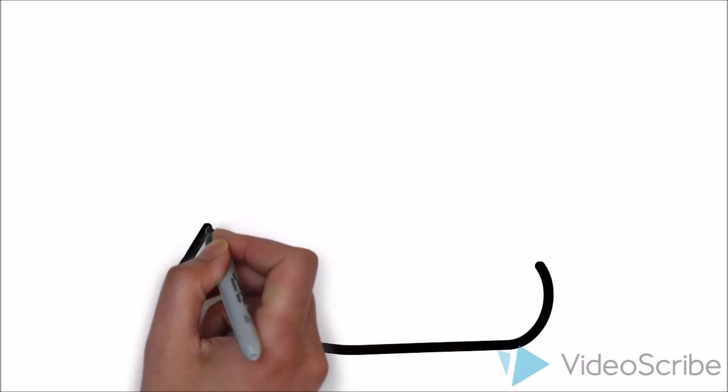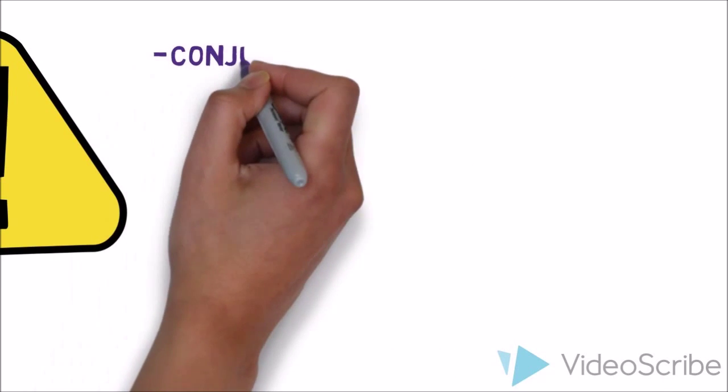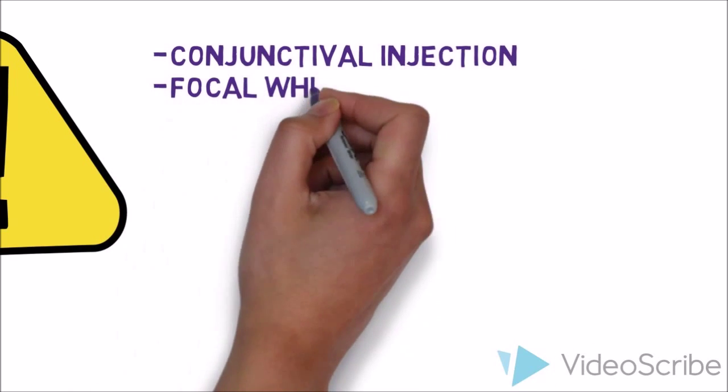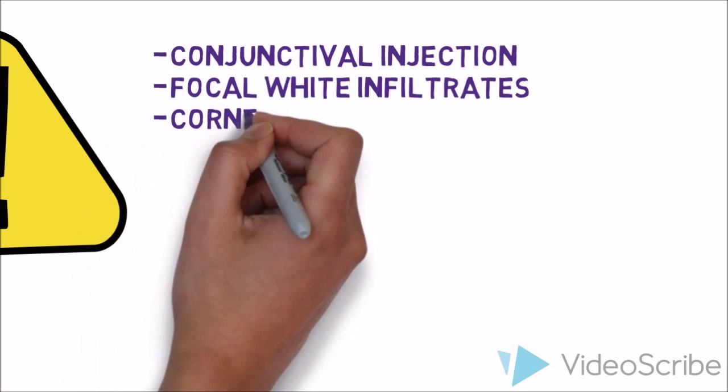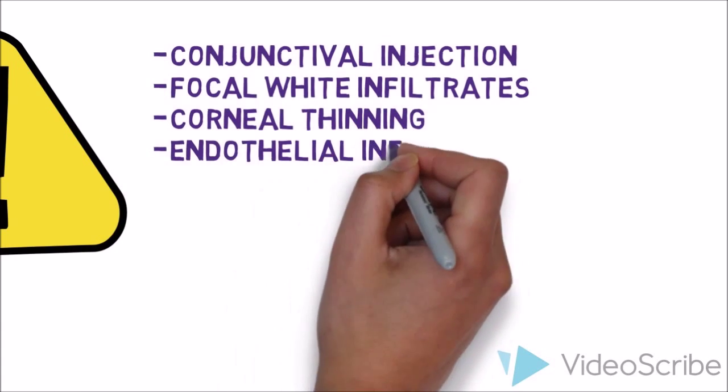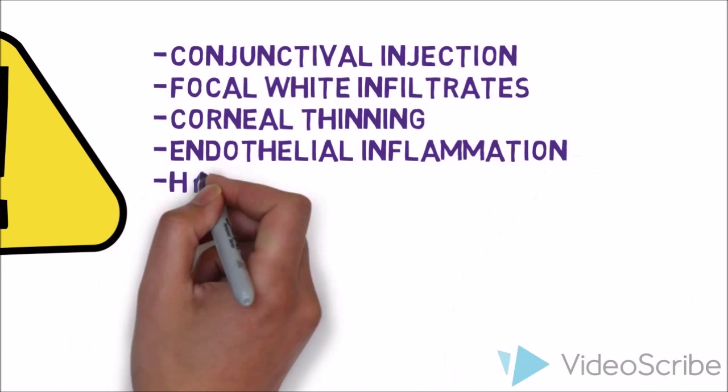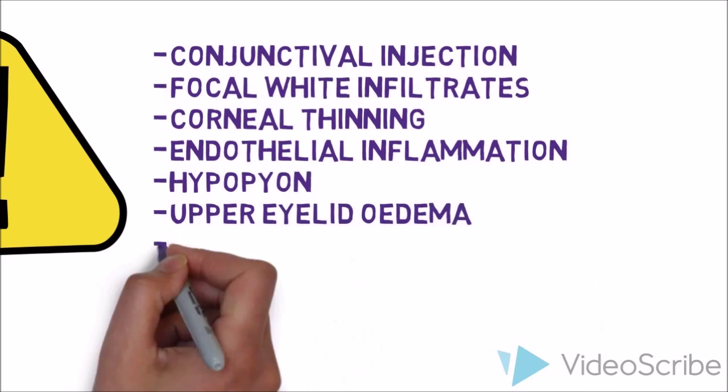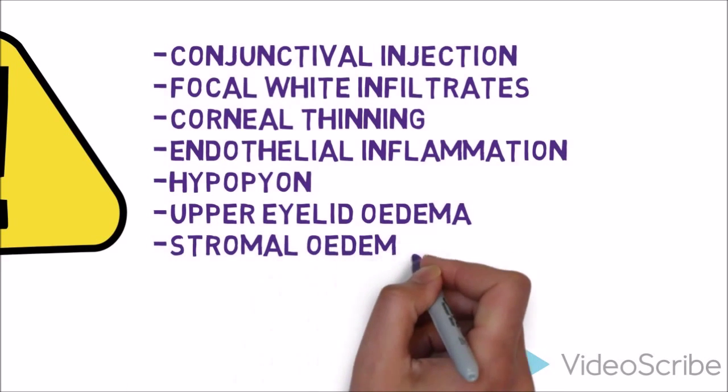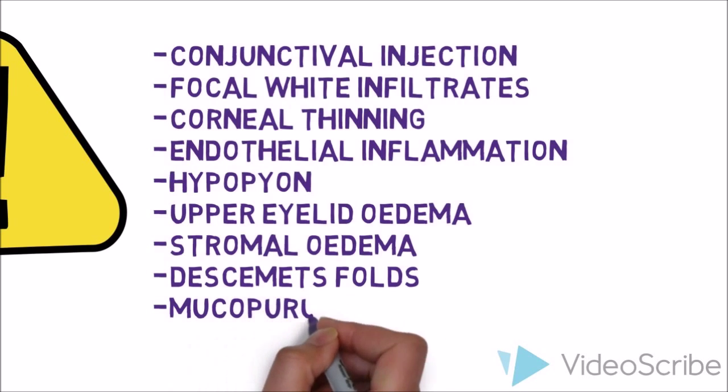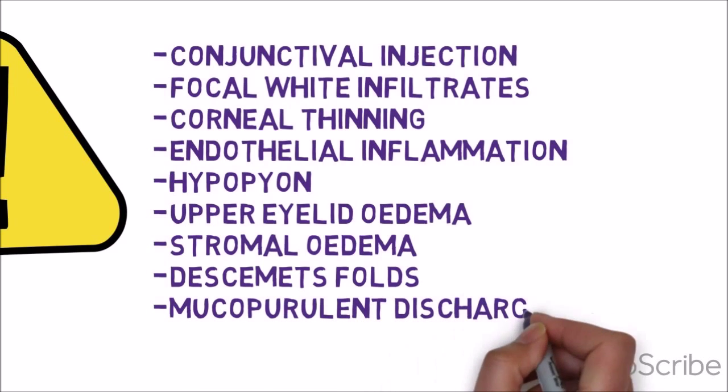Now let's look at some of the signs that you might see: conjunctival injection, focal white infiltrates, corneal thinning, endothelial inflammation, hypopyon, upper eyelid edema, stromal edema, Descemet's folds, mucopurulent discharge, and anterior chamber reaction.